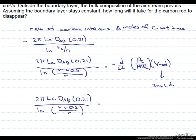And this is going to equal negative dr/dt·ρ_c, the molecular weight of carbon times 2πrL.